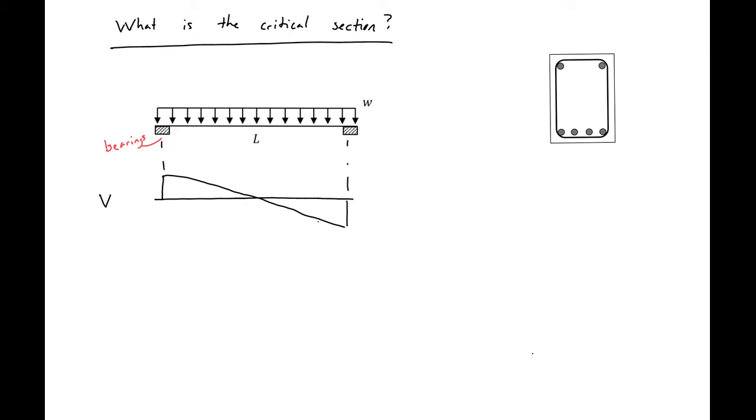What ACI allows you to do is to decrease the shear. So this is our actual. What we can do is we can go a distance D away from the face of the support. So D away from the face of the support on both sides. Away from the face, not the centroid. And remember our D here for positive bending would be from the compression face to the centroid of our tension steel.